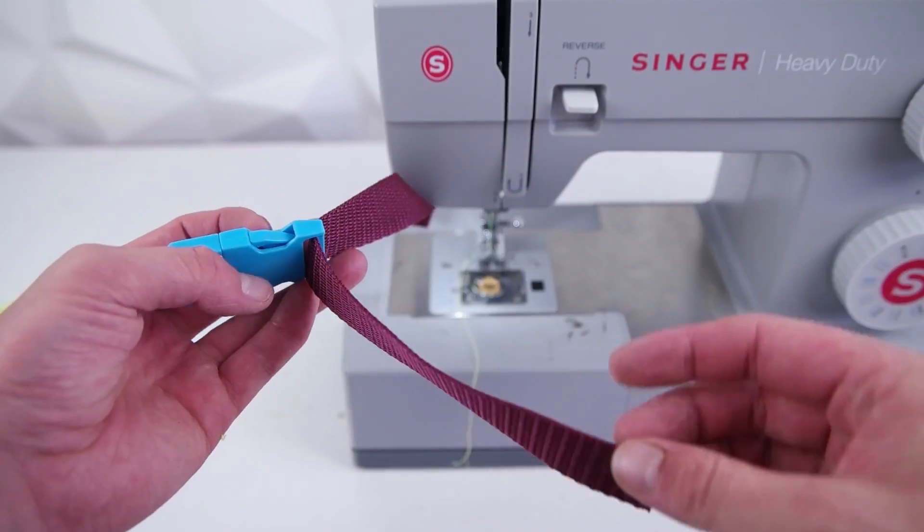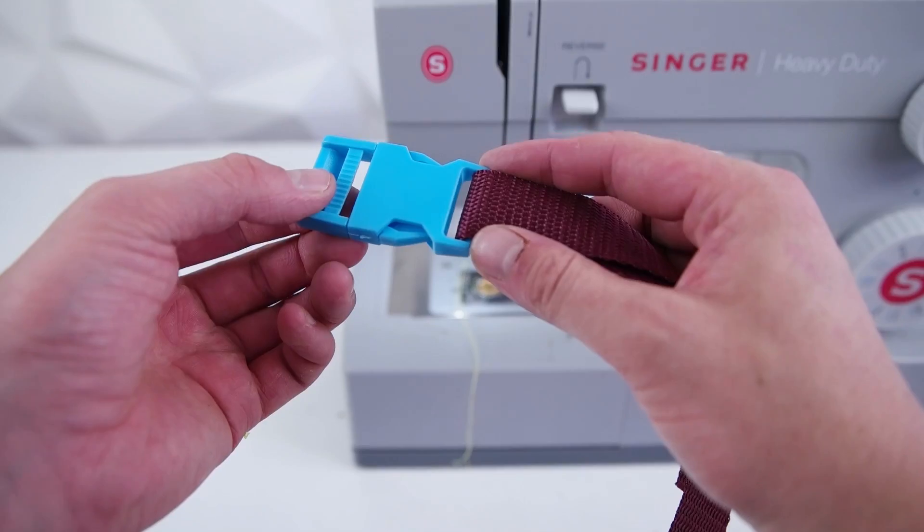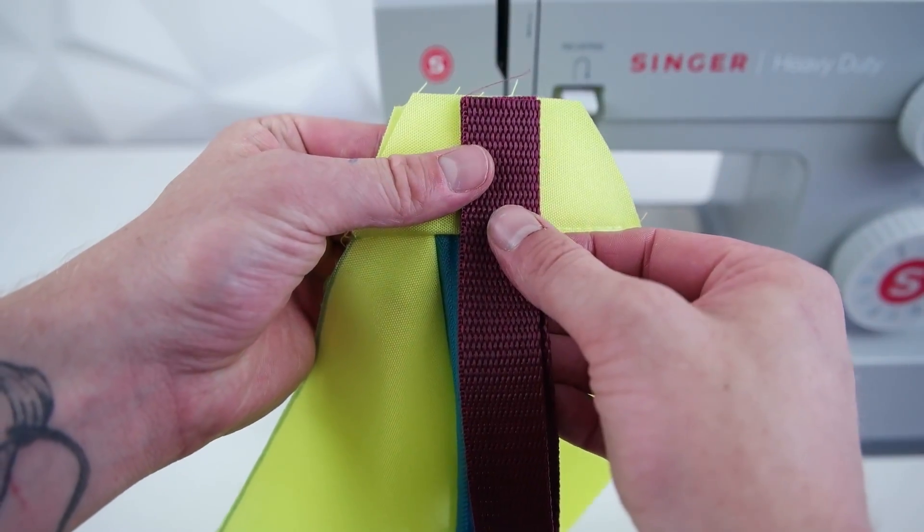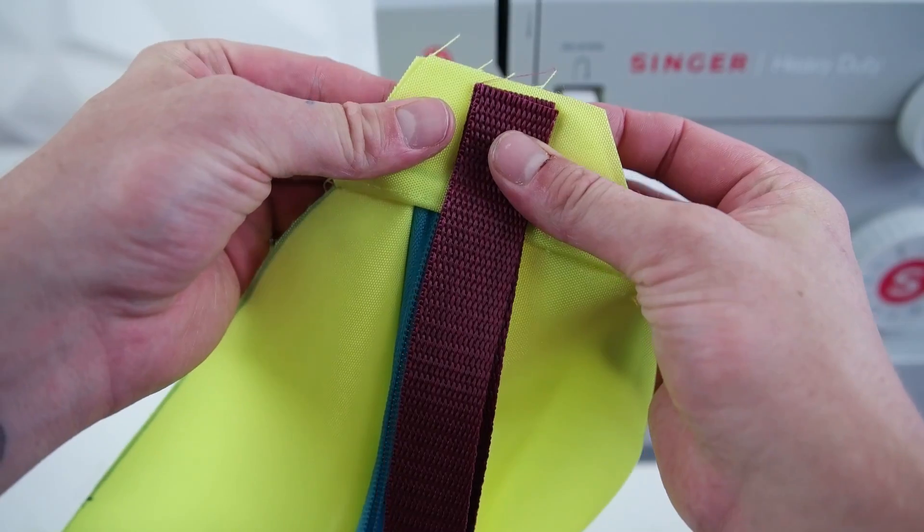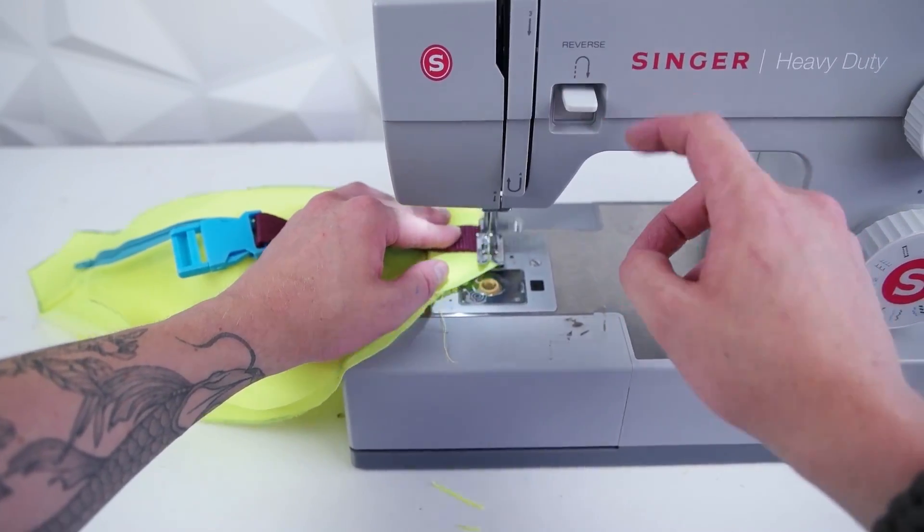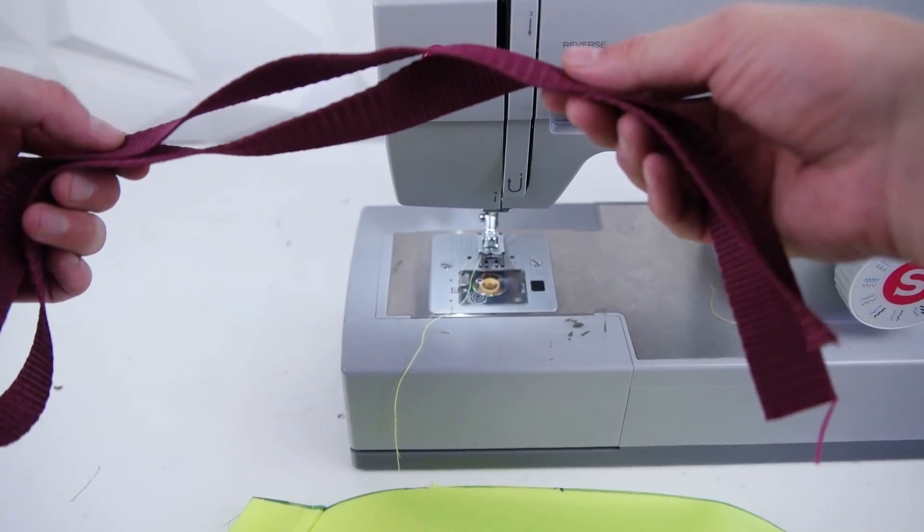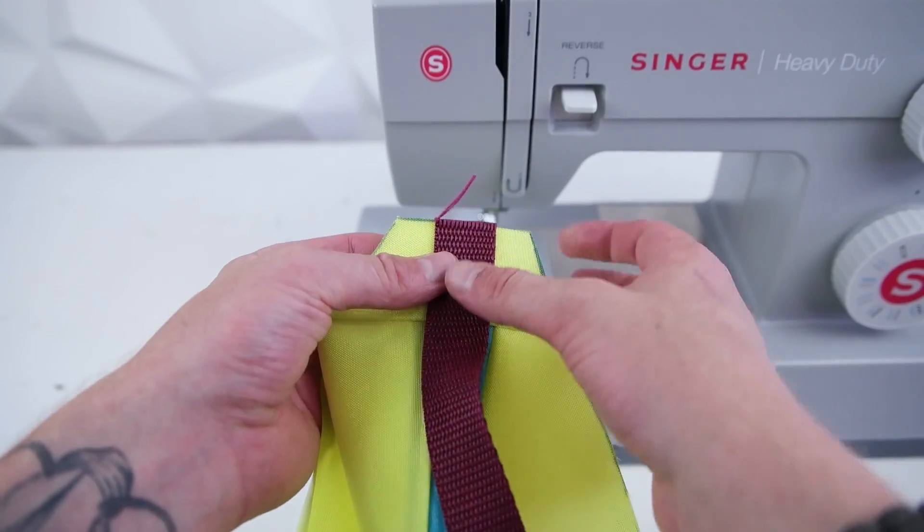Grab about a foot of webbing and your plastic buckle. Loop the webbing through the side that doesn't have the adjuster, and we're going to be stitching it onto the side. Make sure it's lined up in the center. This is to keep it in place while we sew on the back panel. Take the remainder of your webbing and do the same thing for the other side.